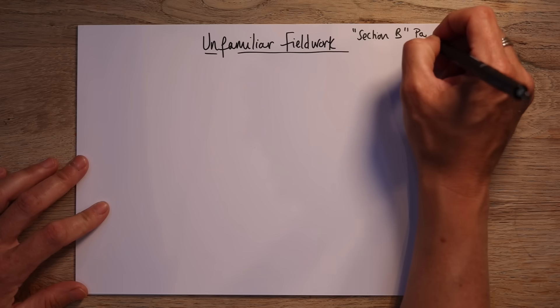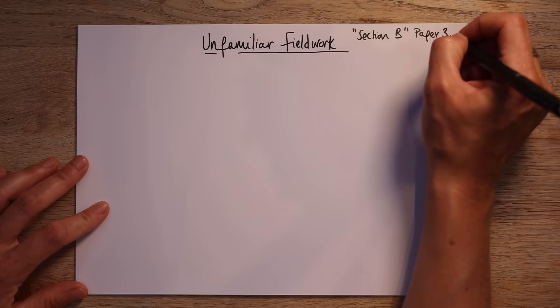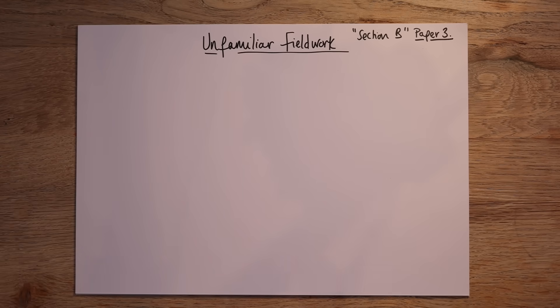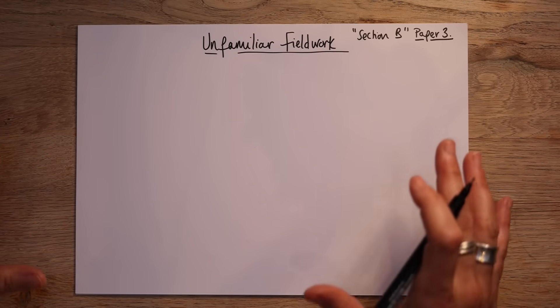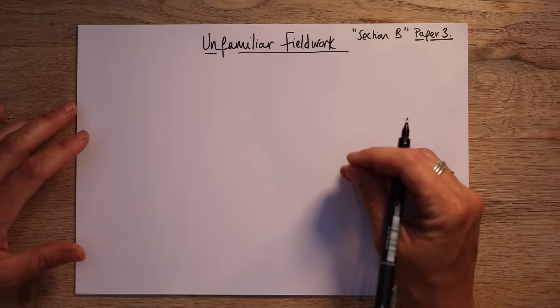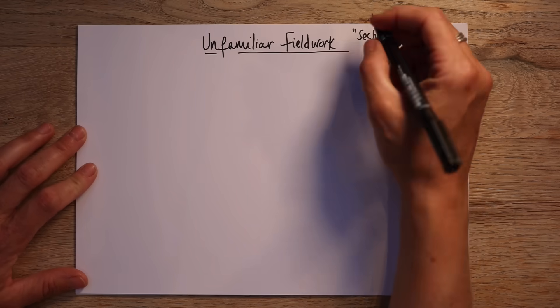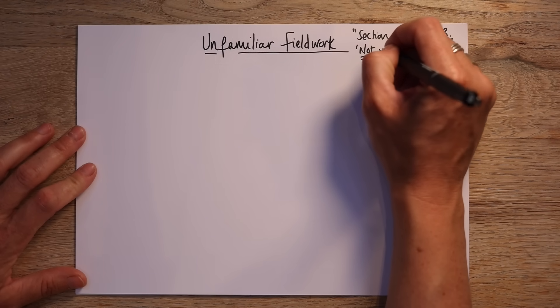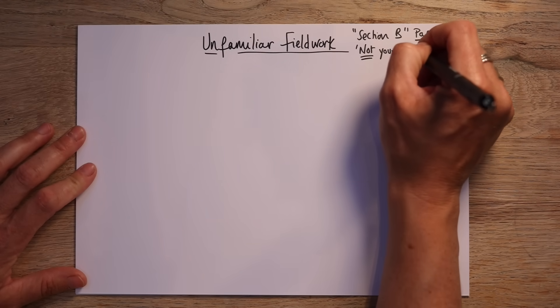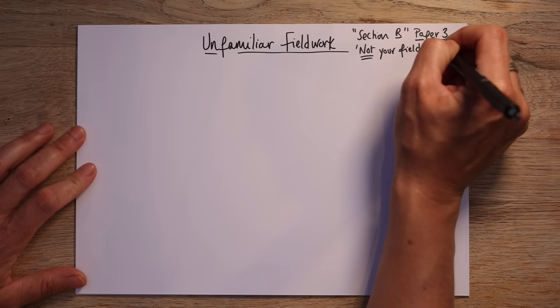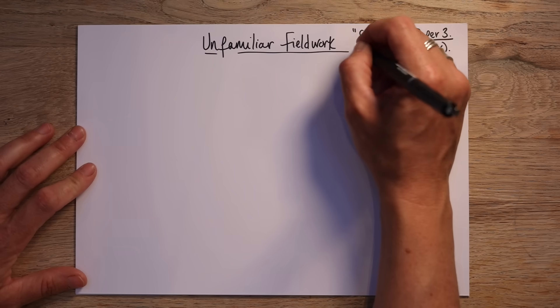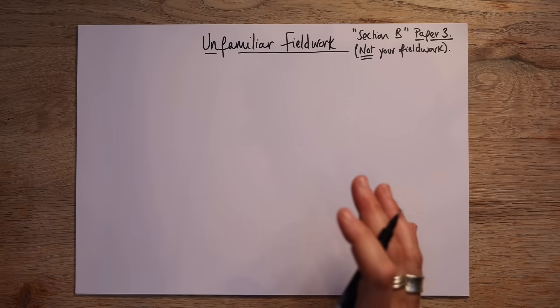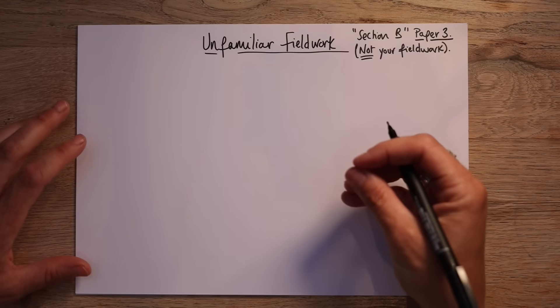So it's paper 3, it's your fieldwork and pre-release paper. Now section B is the smallest, it's really nothing to stress about. It's really small questions, no nine markers for example. But the key thing is it is not your fieldwork. That comes later in section C. It's not your fieldwork.